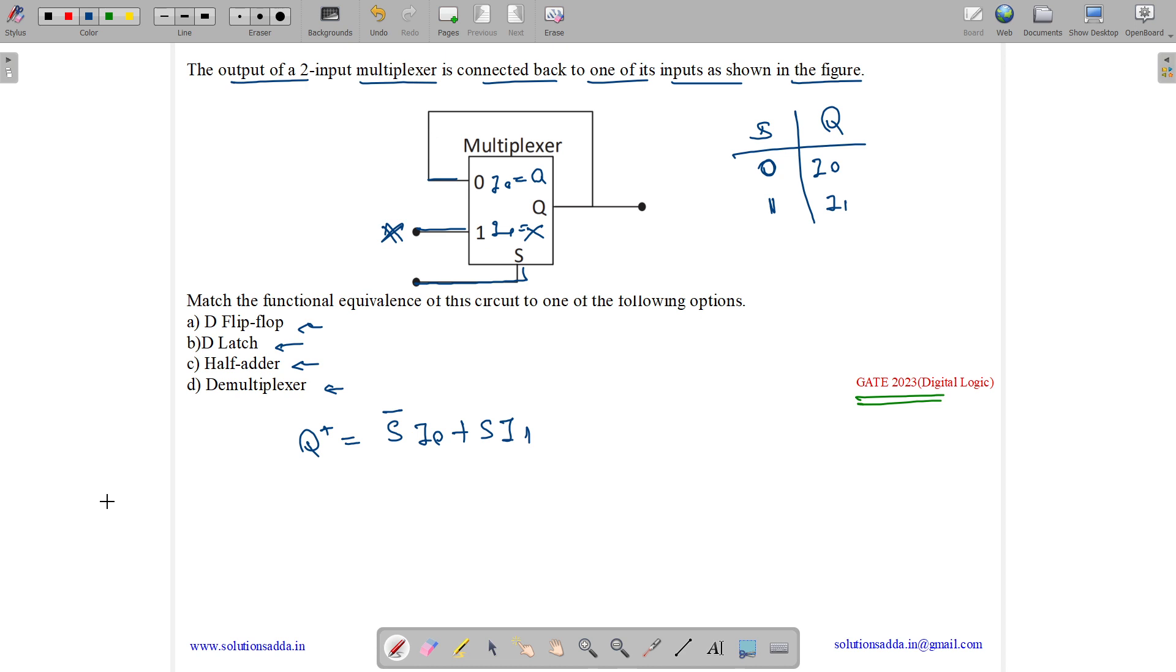Now let us see the conditions when s equals 0. When s equals 0, then q plus equals 0 complement i0 plus 0 into i1. 0 complement is 1, 1 into i0 plus 0, so it equals i0. And what is i0? i0 equals q, which is the previous output. Thus, this is the memory state. Memory state means previous output is retained.